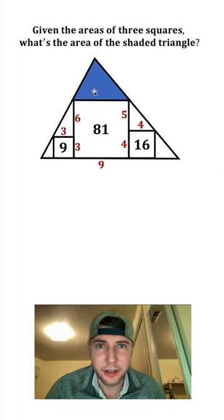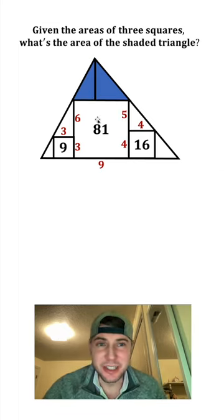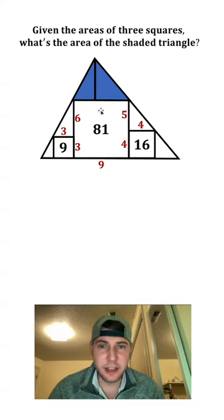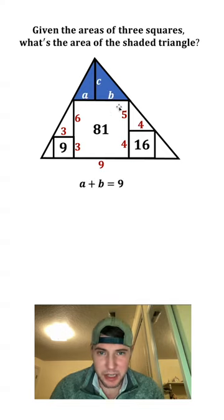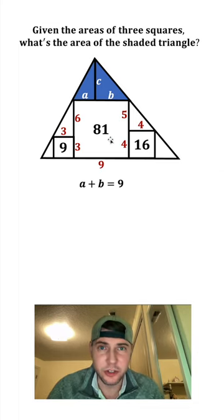And we want to find the area of this blue triangle. Let's drop down an altitude, which will give us the height of the triangle. Let's call this length A, this length B, and let's call the height C. So we know that A plus B is also equal to 9, because it's one of the sides of this larger square.